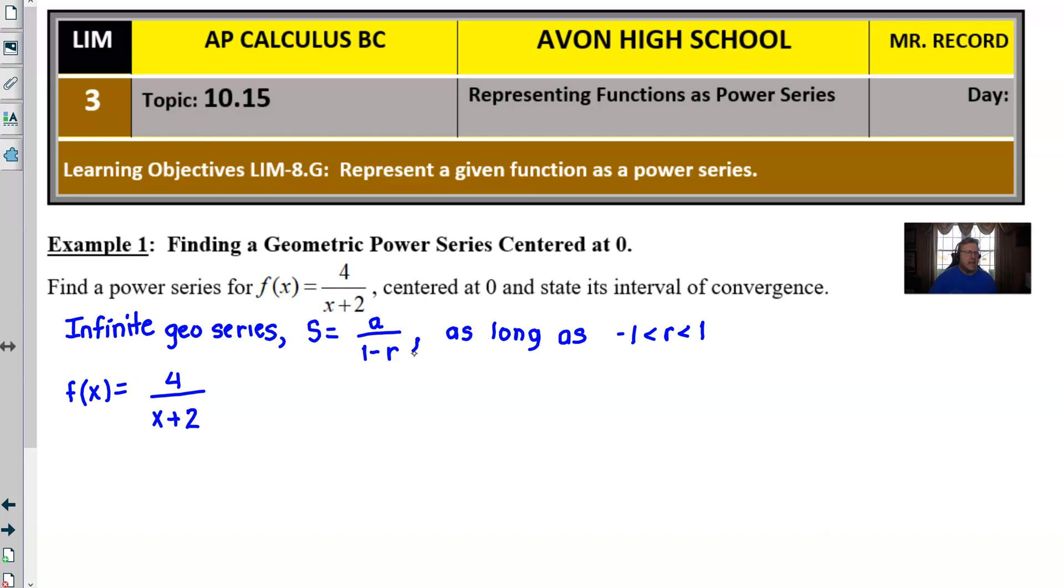And so the very first thing that you can do is just simply swap the order of the 2 and the x. Not a problem, just reverse them, commutative property is alive and well. But you probably also realize that there should be a subtraction in that denominator, so we need to make that happen as well.